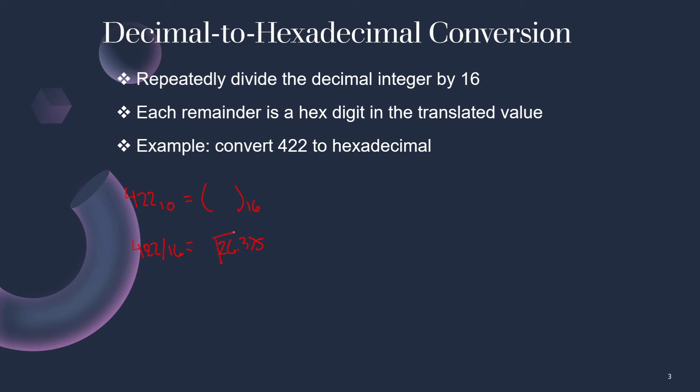But we want to keep this number and we want to figure out what's the remainder. So we're going to do 422 minus 26 times 16. And that value comes out to be 6.